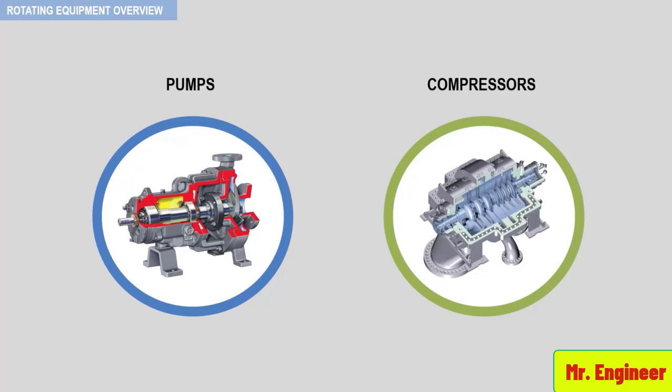A pump moves an incompressible fluid, which is a liquid. However, a compressor moves a compressible fluid, which is a gas. And the volume of that gas changes with pressure, temperature, and gas composition, as we shall see further ahead.